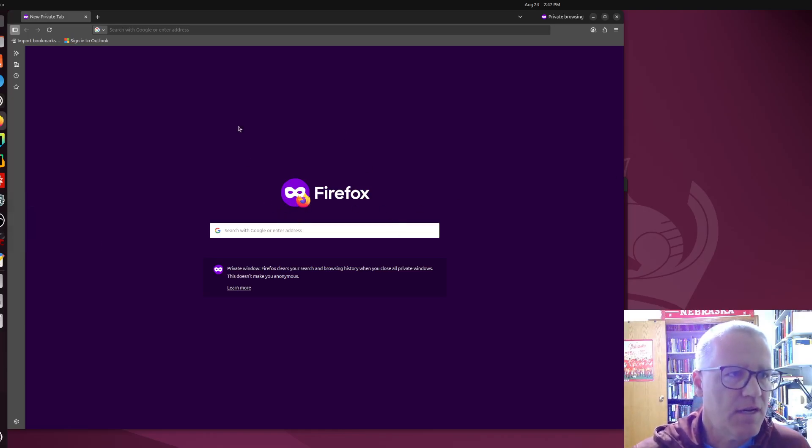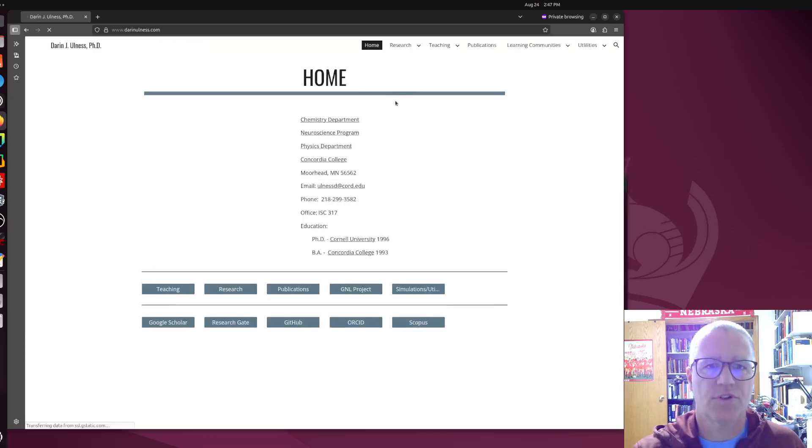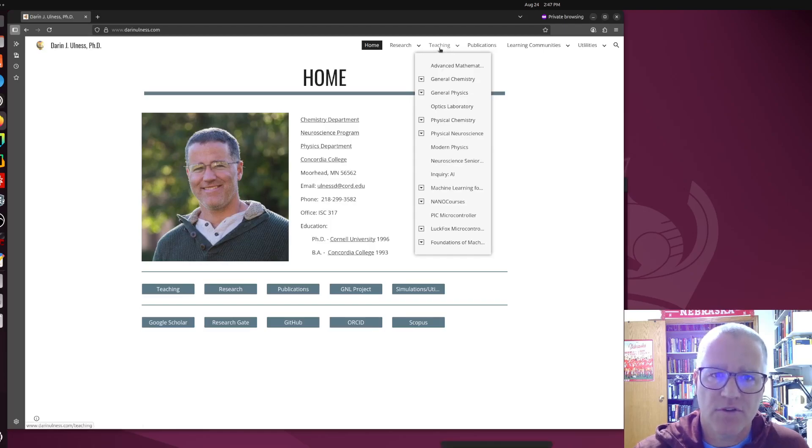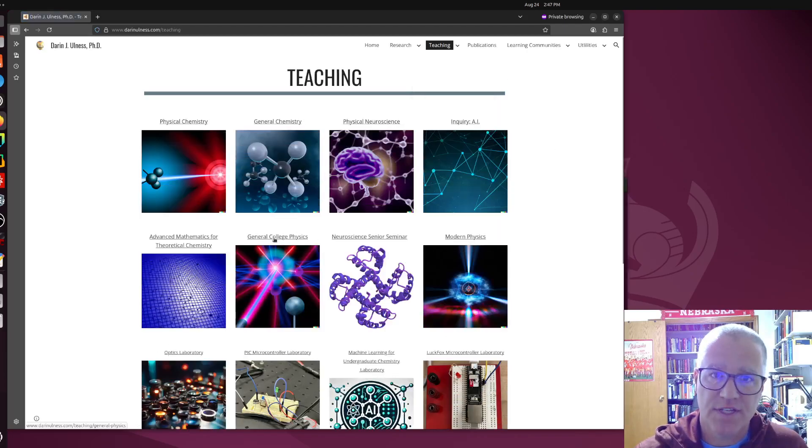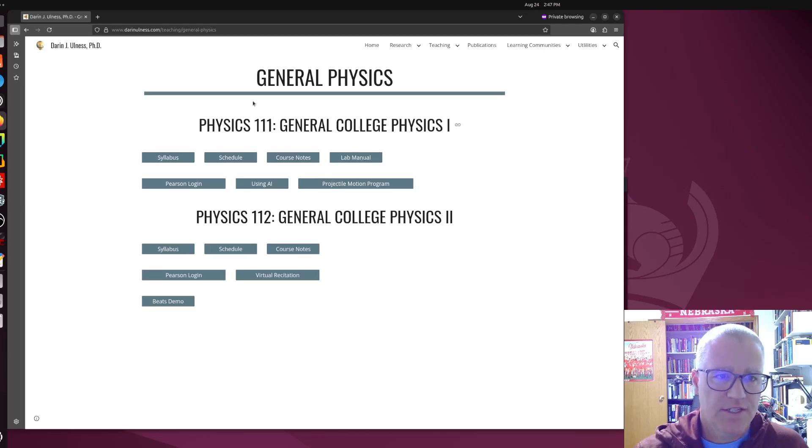Any browser will work. If you just start typing darinolness.com, we'll just go there. This is my home page or landing page here. If you go to teaching and then general physics is what we're looking for, you can either just hit teaching and find general college physics, or you can use the drop down general physics. This is physics 111, the first half of a year of non-calculus based physics. In a separate playlist we'll do the second semester. At Concordia it's called physics 111 and 112, but it's really just general college physics.